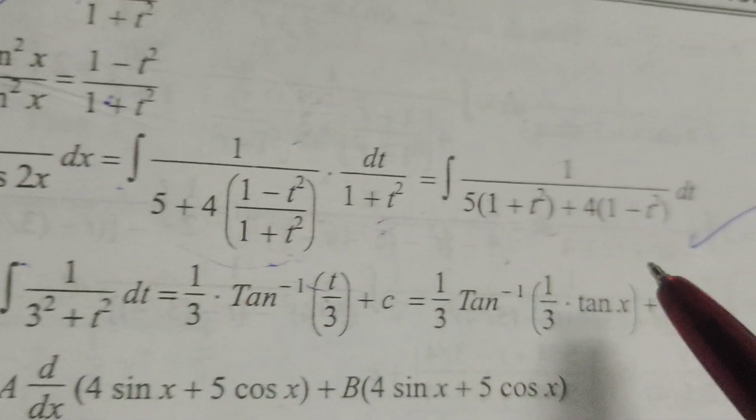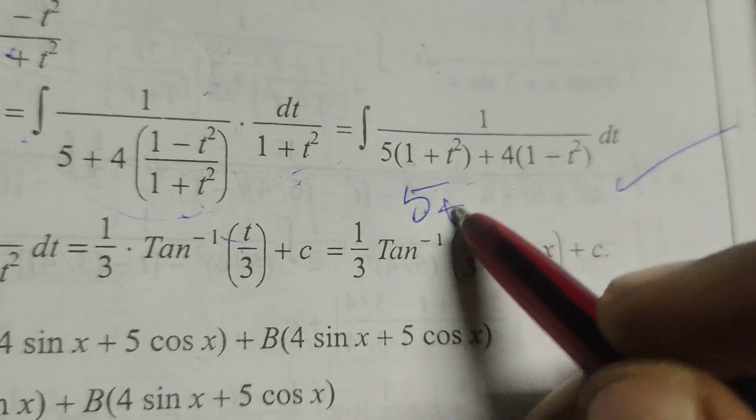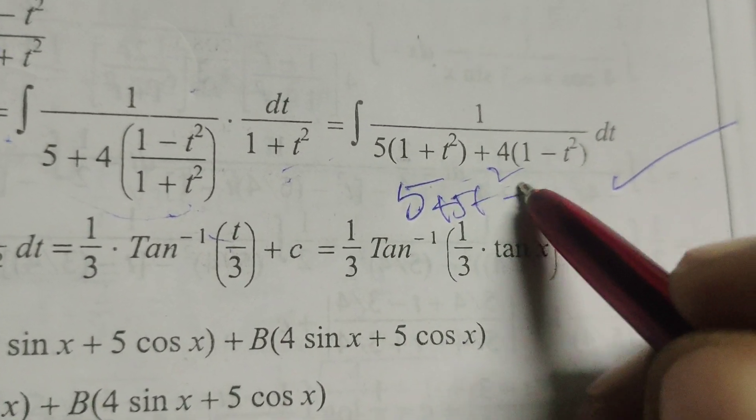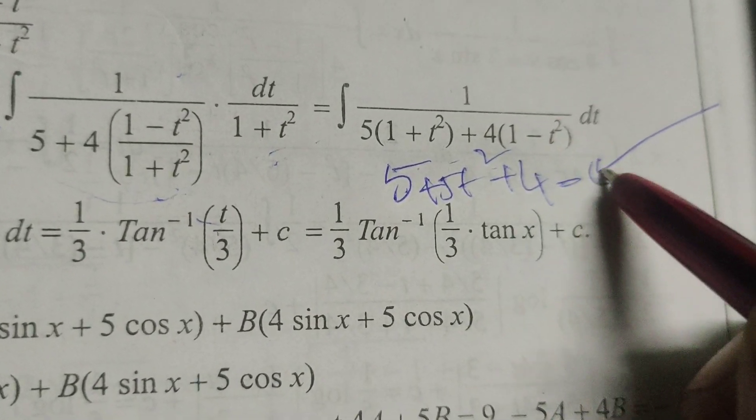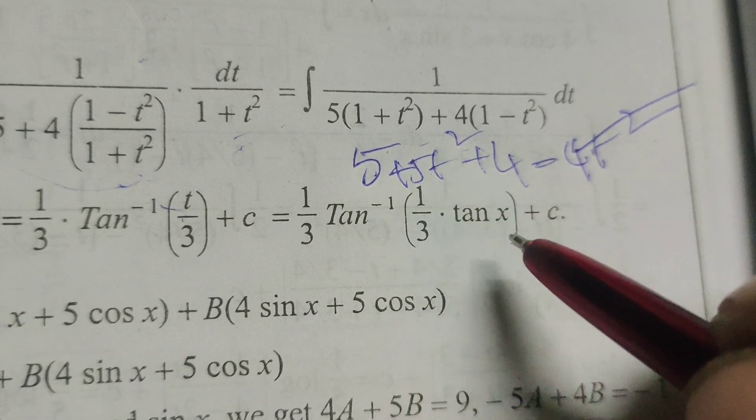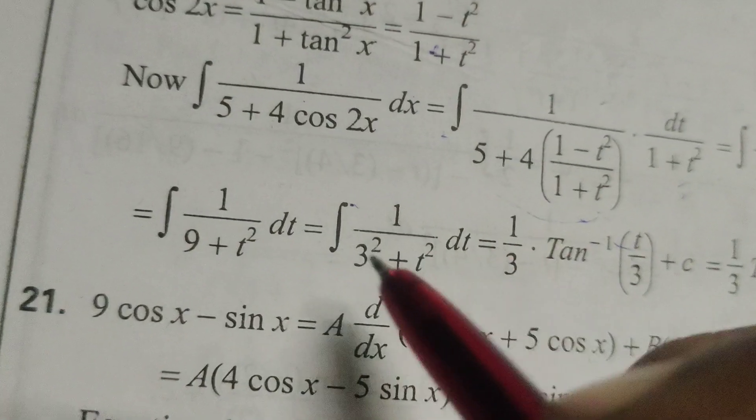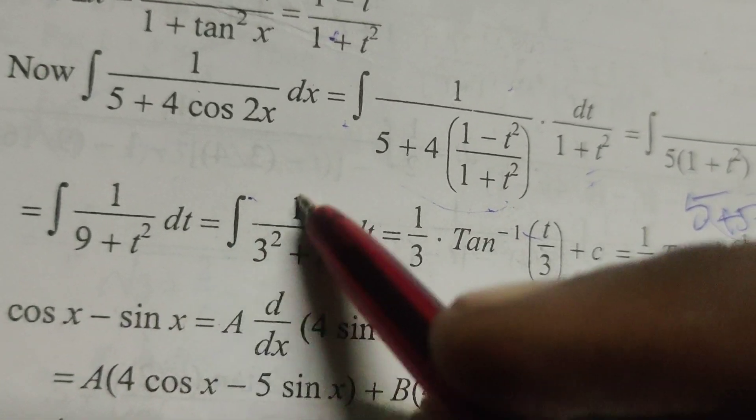Now integrate this. First simplify: 5 plus 5t square plus 4 minus 4t square. Therefore, 5t square minus 4t square is t square, 5 plus 4 is 9. So 9 plus t square dt.